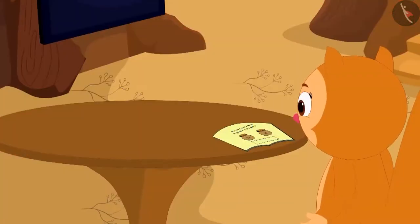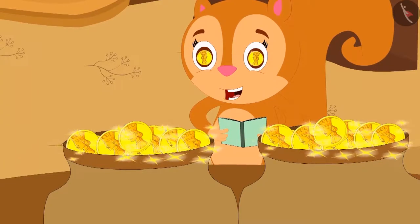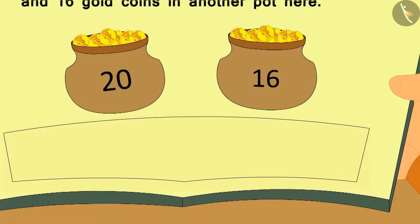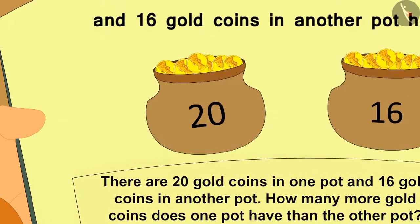Suddenly, the two pots filled with gold coins appeared in front of Chanda. Chanda was not able to believe her eyes. Children, can you make another question as well on this? Absolutely right! There are 20 gold coins in one pot and 16 gold coins in another pot. How many more coins are there in one pot than another? Likewise, we can make a subtraction puzzle as well.